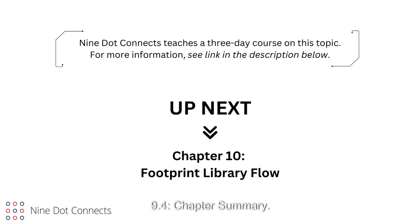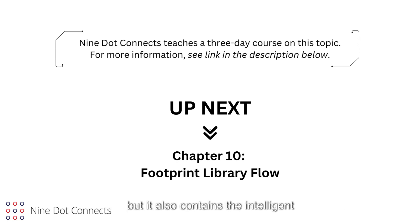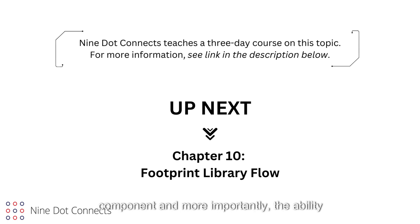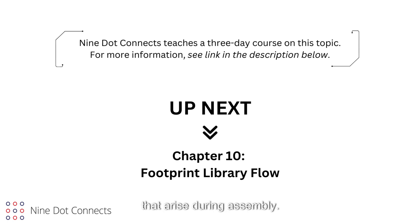9.4 Chapter Summary. A good symbol not only has a good graphical representation, but it also contains the intelligent information necessary for searching the component, and more importantly, the ability to assemble a good bill of materials. Attention to this aspect of the symbol will guard against many of the costly issues that arise during assembly.